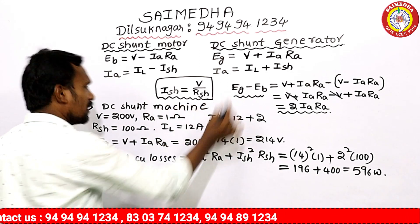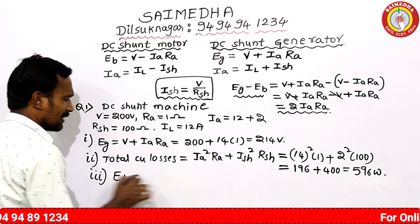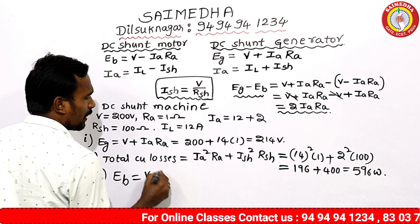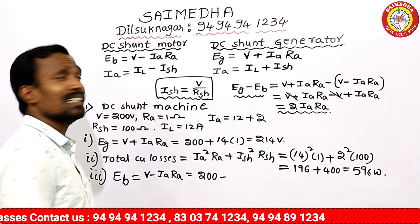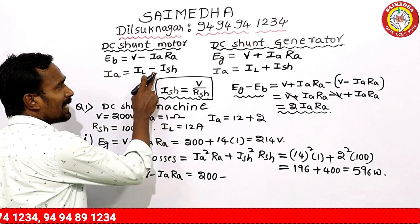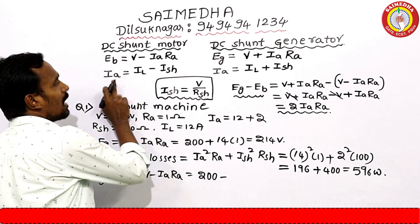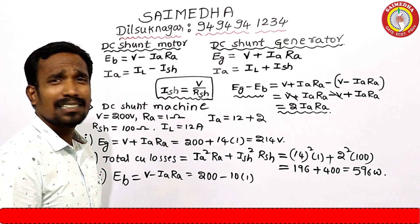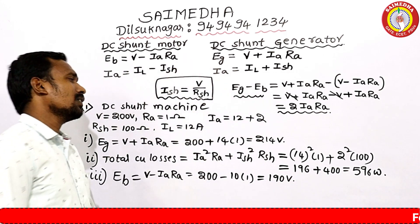For this same DC shunt machine, find the back EMF. Back EMF Eb = V minus IA·RA. Here, IA equals IL minus ISH = 12 minus 2 = 10 amperes. So Eb = 200 minus 10×1 = 190 volts.